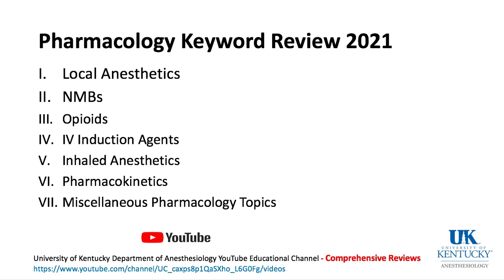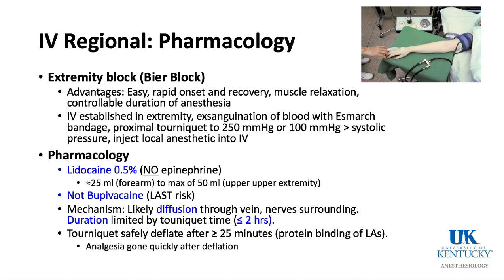IV regional pharmacology — the Bier block — involves establishing an IV in an extremity, exsanguinating the arm by wrapping it with a rubber bandage distal to proximal, then inflating a tourniquet to 250 mmHg or about 100 mmHg above systolic blood pressure to stop blood flow. A local anesthetic is then injected into the distal hand IV and the block sets up very rapidly with rapid onset and recovery. It provides muscle relaxation and controllable duration of anesthesia.